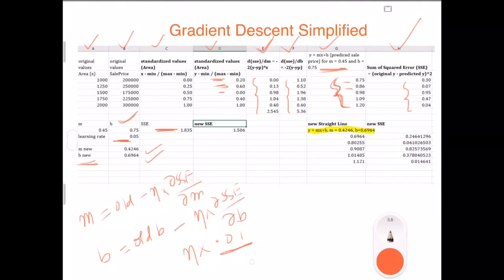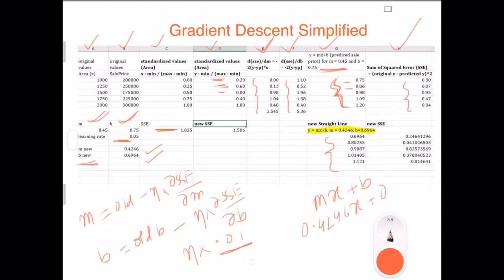These were the original values if you see here. Now that we have a new M and B, we again calculated the predicted price. What we did is simply plugged the new equation of MX plus B, and this time it became 0.4246 times X plus 0.6964. Initially it was 0.45X plus 0.75.